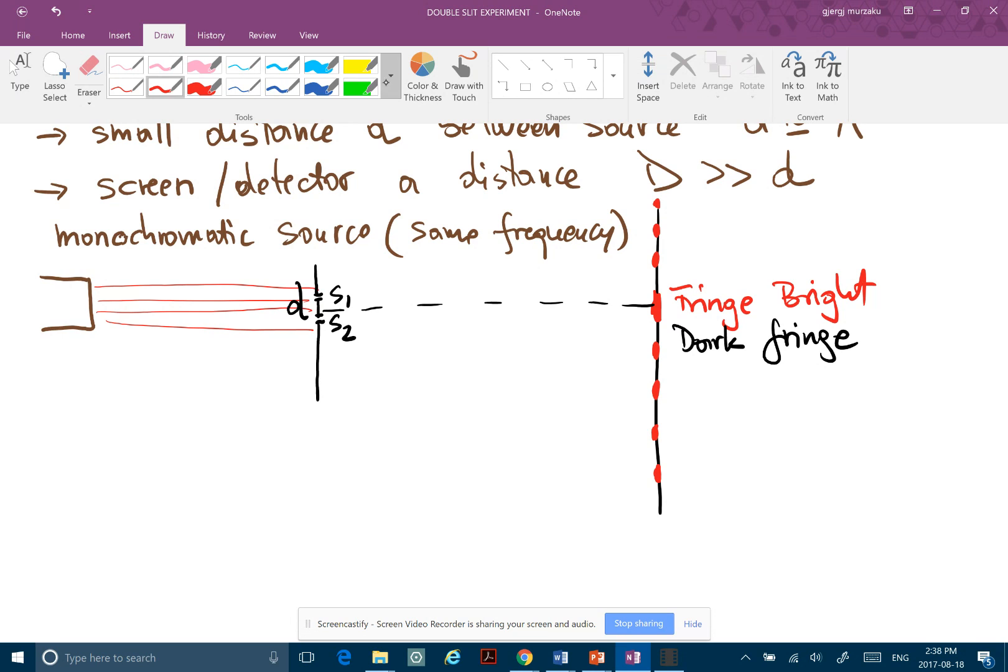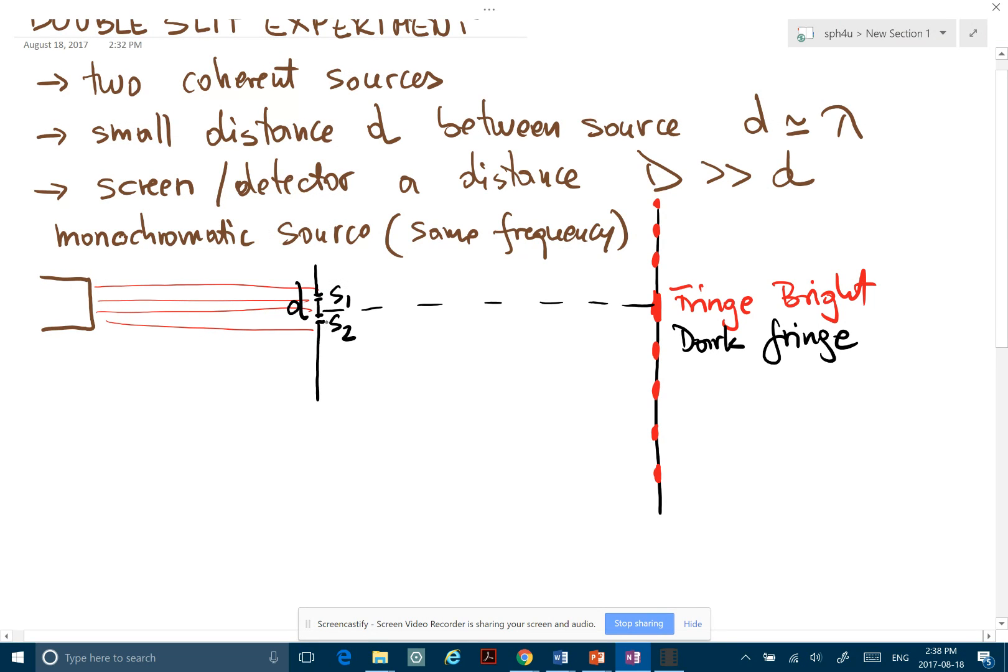And the same math that was applied to any generic sources of waves, if you have the Mth bright fringe, then what you would do is you want to figure out a couple of things. One is, at what angle will that bright fringe be located, and what distance from the center based on how far the screen is from the slits.